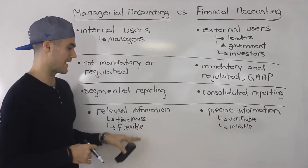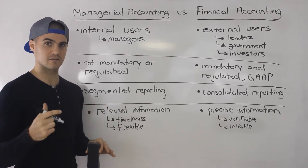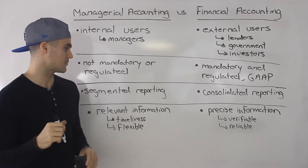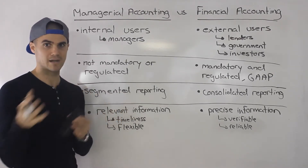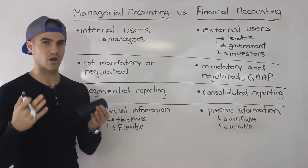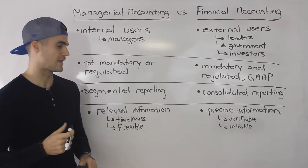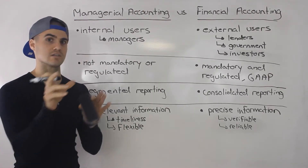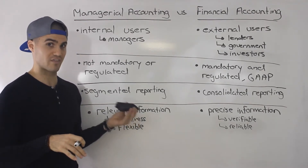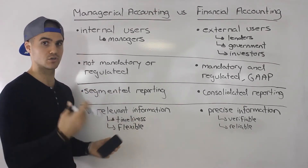You can get precise information for managerial accounting, but the problem is that the more you start segmenting, the more expensive precise information costs and the more expensive it is to implement a system to track everything. For example, if you have segmented reporting on each manager and you want really precise information — like how much printer paper they're using — it's going to cost a good amount of money to implement a system to monitor that. And is that really going to help you figure out whether to add a product line to a city or region? Not really. So you want relevant information for your decision making.